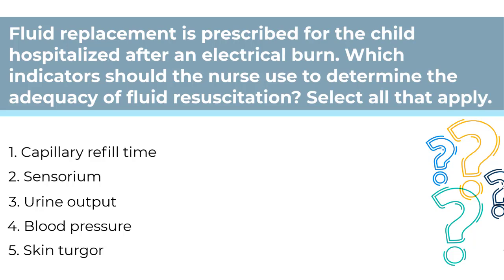Fluid replacement is prescribed for a child hospitalized after an electrical burn. Which indicators should the nurse use to determine the adequacy of fluid resuscitation? Select all that apply. Number 1, Capillary refill time. Number 2, Sensorium. Number 3, Urine output. Number 4, Blood pressure. Number 5, Skin turgor.